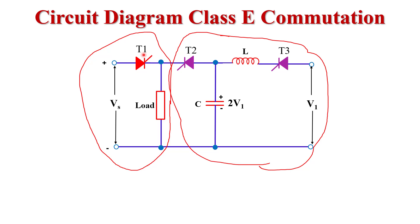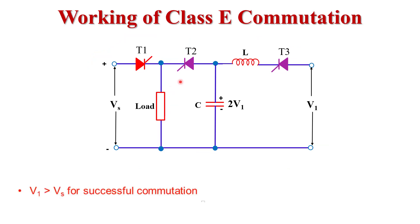Now we move on to the working of class E commutation — how we turn off thyristor T1 using this commutation circuit. First, we assume that all three thyristors are initially turned off. When all thyristors are turned off, they all behave like open circuits and no current flows across the circuit. So initially the capacitor is charged to zero voltage and the inductor also has no charge.